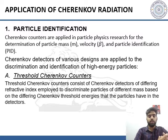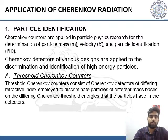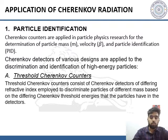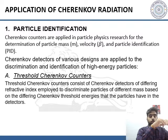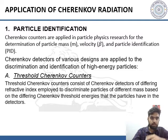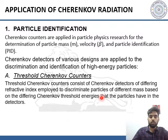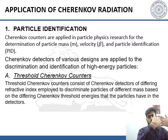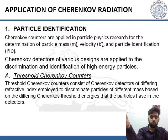There are many applications of Cherenkov radiation. One is gamma ray detection. Another important one is particle identification. Cherenkov counters are applied in particle physics research for the determination of particle mass, velocity, and particle identification. In the Super Kamiokande detector, Cherenkov radiation rings are used to detect neutrinos and muons. Cherenkov detectors of various designs are applied to discrimination and identification of high-energy particles. Threshold Cherenkov counters consist of Cherenkov detectors of different refractive indices to distinguish particles of different mass based on their different Cherenkov threshold energies.